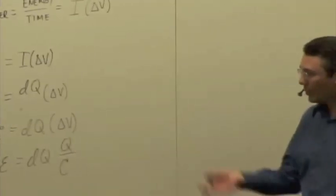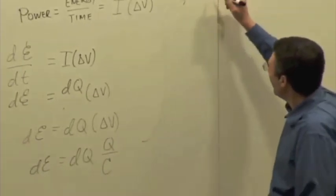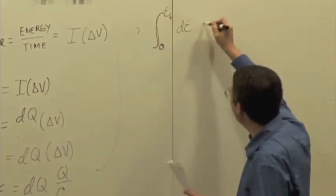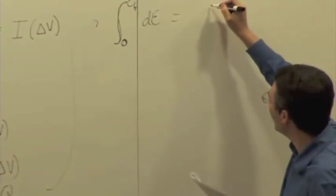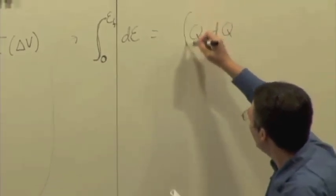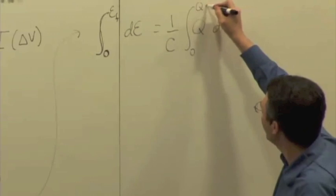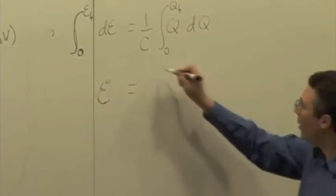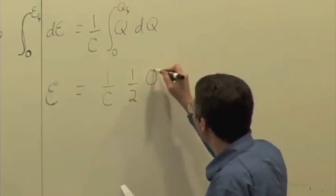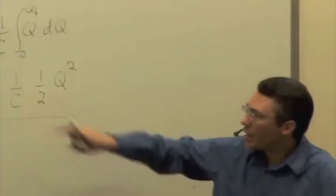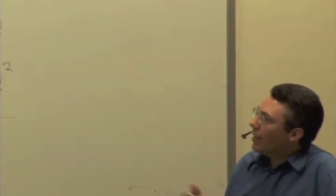This is an equation we can solve by integrating both sides. The energy stored is the integral from zero to some final value of dE, which equals the integral of Q times dQ over C. The capacitance is a constant, so I can bring it outside. This gives the final energy equal to one over C times one half Q squared, or one half Q squared over C. So I can express the energy stored in the capacitor in terms of the charge and the capacitance.